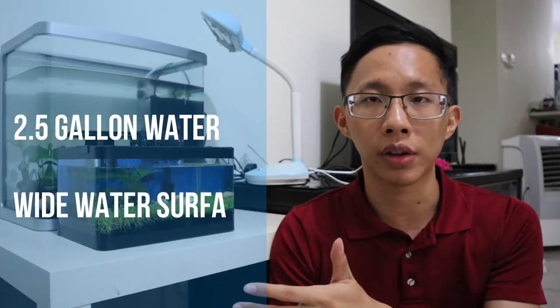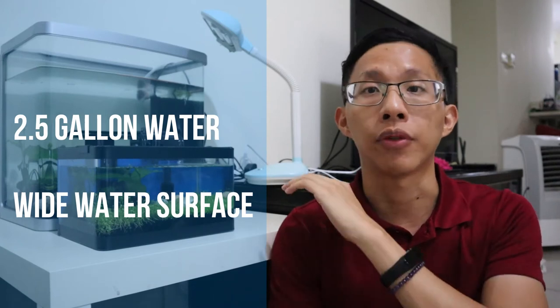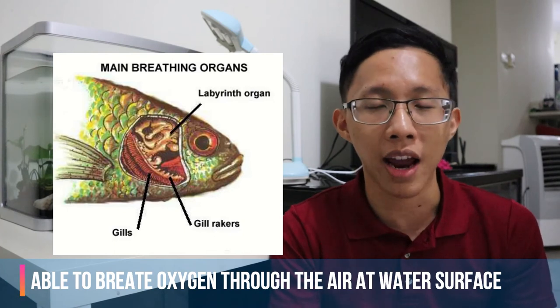If that's the case, do be reminded that betta fish would need a minimum of 2.5 gallons worth of water and ideally have a larger, wider tank that has more water surface so that more oxygen can dissipate inside. However, this is something that would be very unlikely because betta fish is a labyrinth animal, which means they can breathe oxygen through the air. So for the most part, the betta fish yawning would just be an occasional act that is harmless.